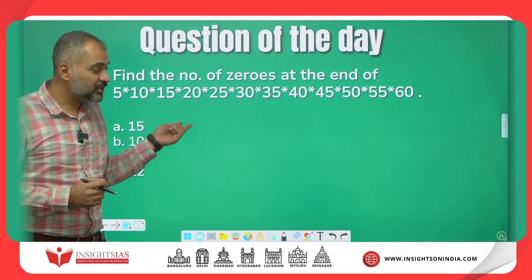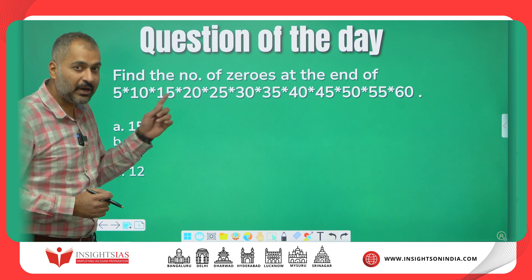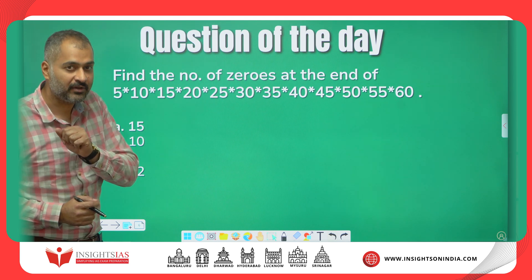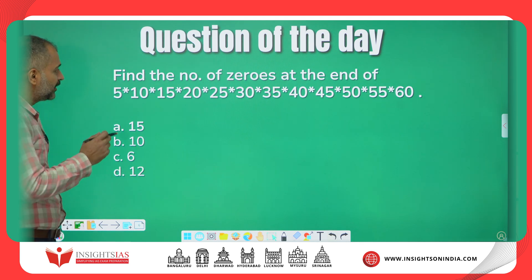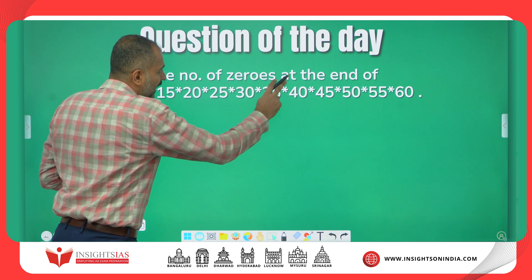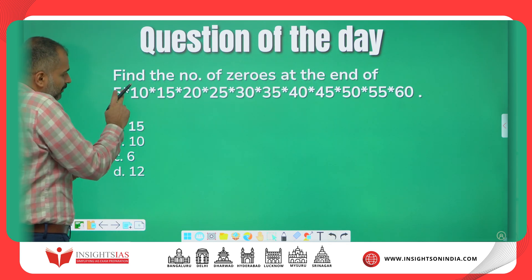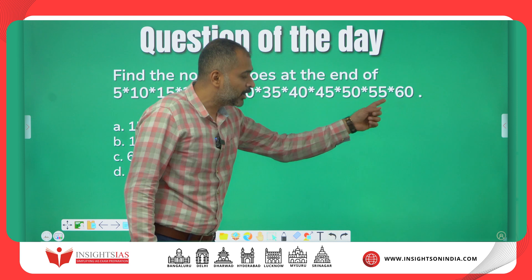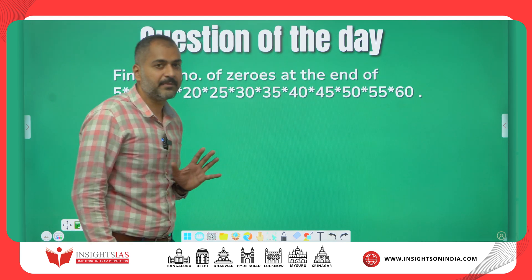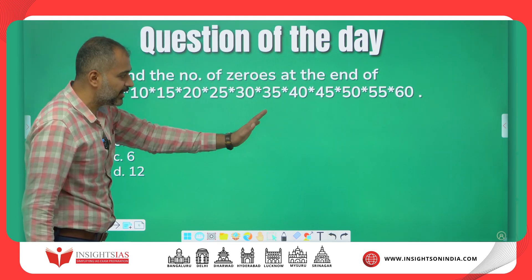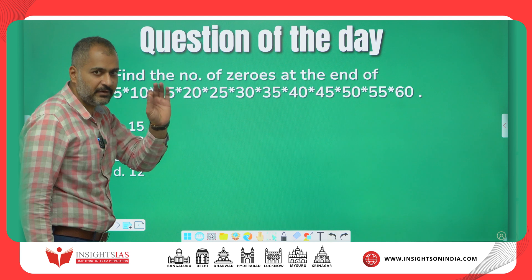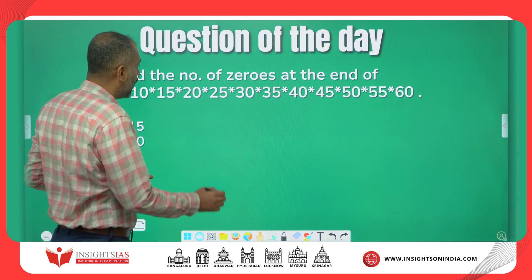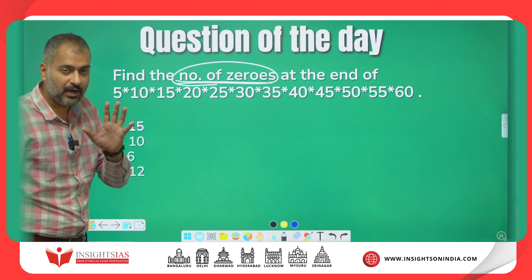Today, I have picked a question based on factorization, but the question won't be asked in factors. I will ask the question in this manner: Find the number of zeros at the end of 5×10×15×20×25×30×35×40×45×50×55×60. If I multiply everything here, this has to end with zero. The question is: how many zeros?